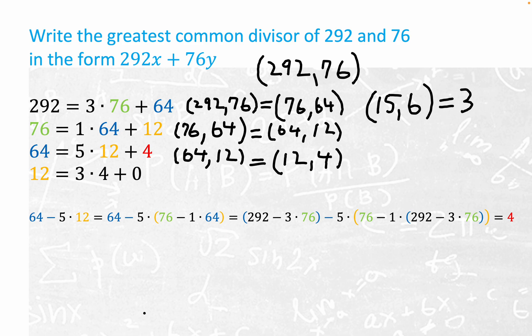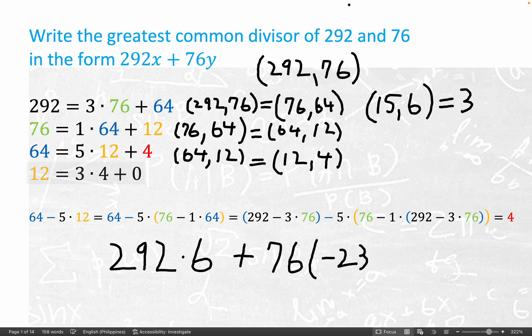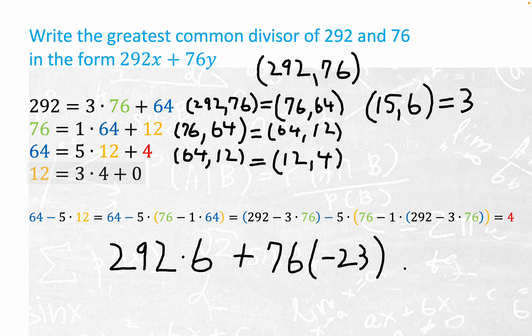What really happens right here, you end up getting when you work it all out and do the arithmetic here, which I didn't want to clutter up the screen too much, you end up getting 292 times 6 plus 76. This is a monster number as far as trying to figure it out on the fly, times negative 23. You guys can verify that. I double-checked it. Pretty certain it's correct. That actually equals to the greatest common divisor of 4.